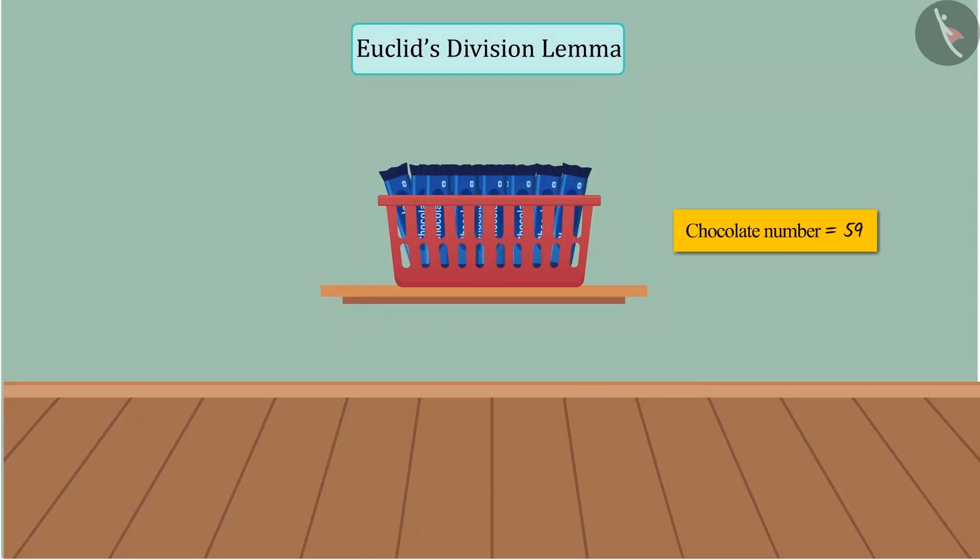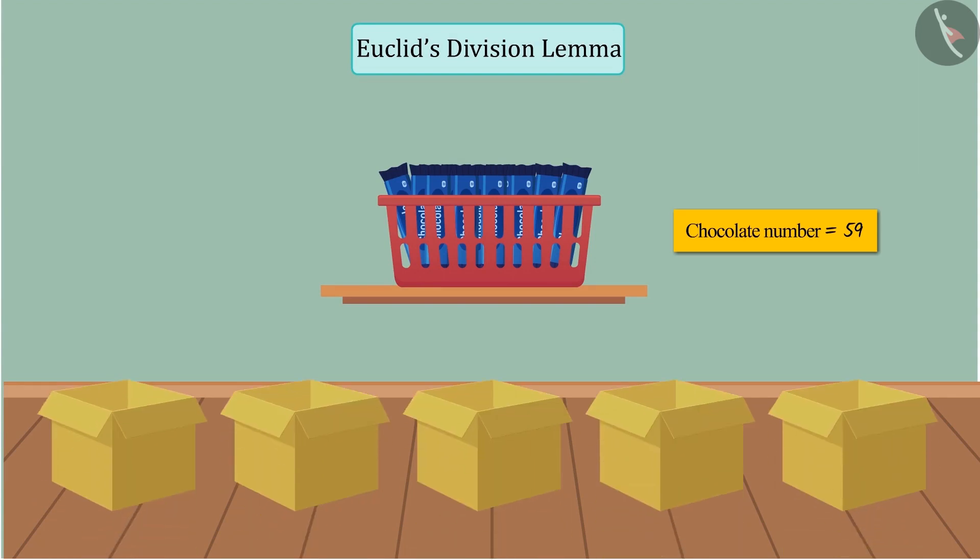Now, if you want to keep the same chocolates in 5 boxes instead of 3 such that there are equal number of chocolates in each box, then what will you do?